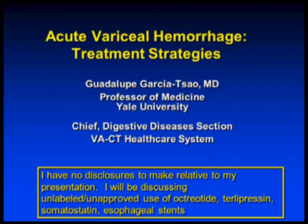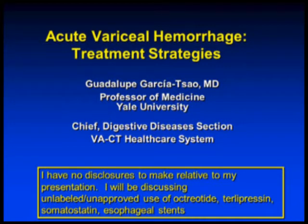Thank you, Dr. Greenwald, and I also want to thank the course directors for having invited me to give this lecture. This is clearly one of the scariest complications of the patient with cirrhosis — acute variceal hemorrhage — and we'll talk about treatment strategies mostly. I have no disclosures, but I will be discussing the fact that octreotide, terlipressin, and Sengstaken esophageal stents are not FDA approved.